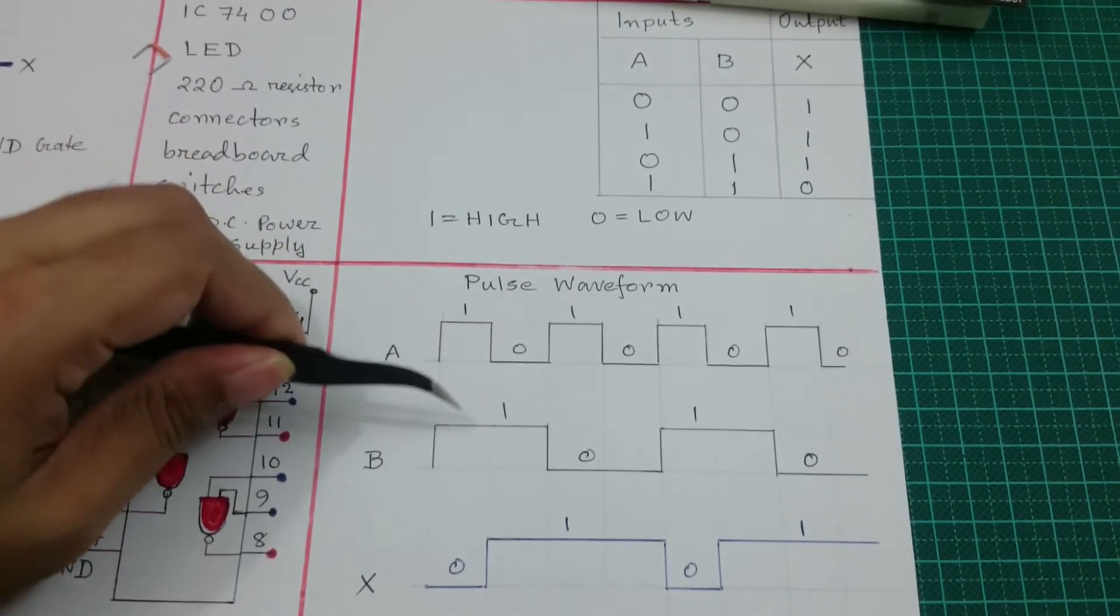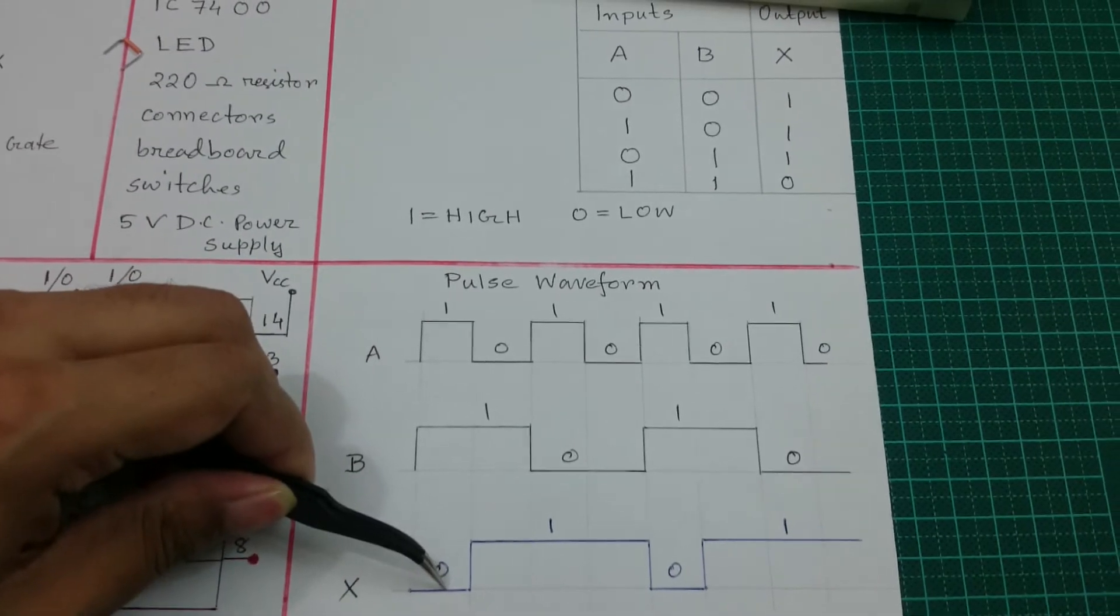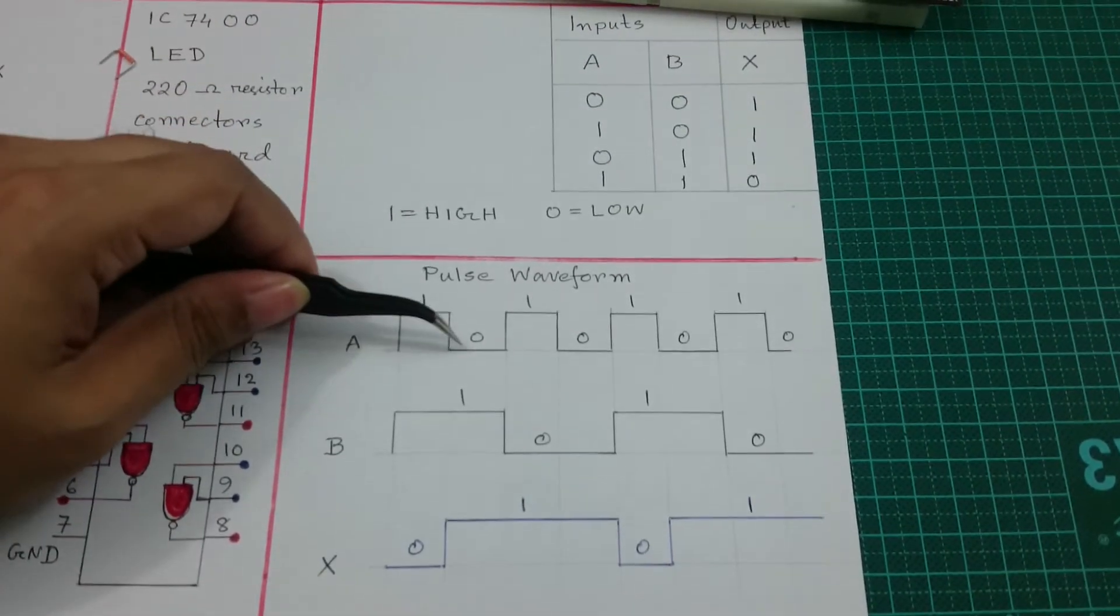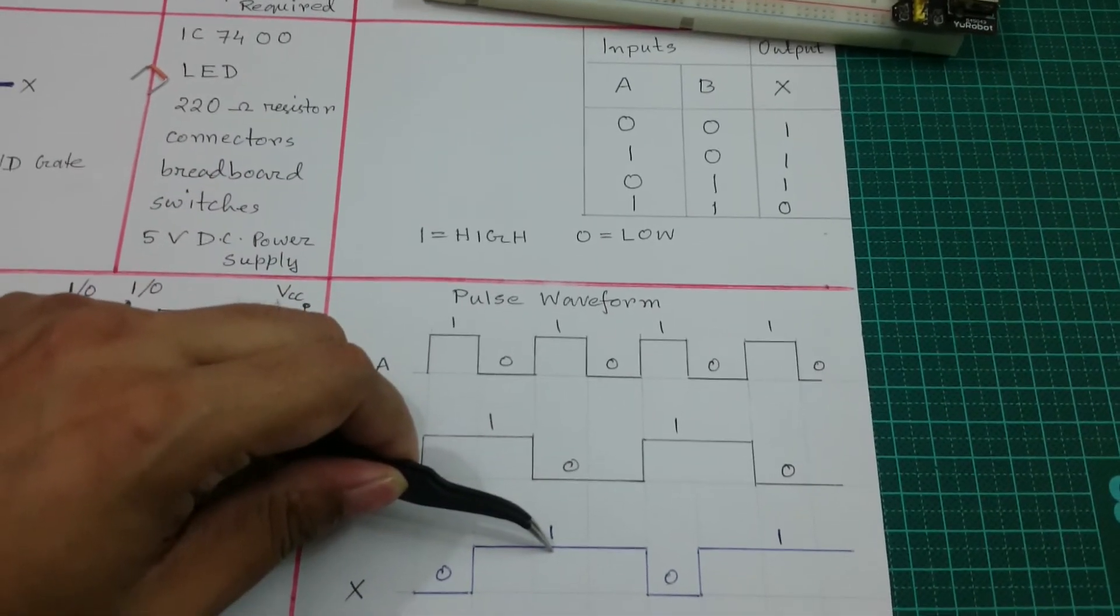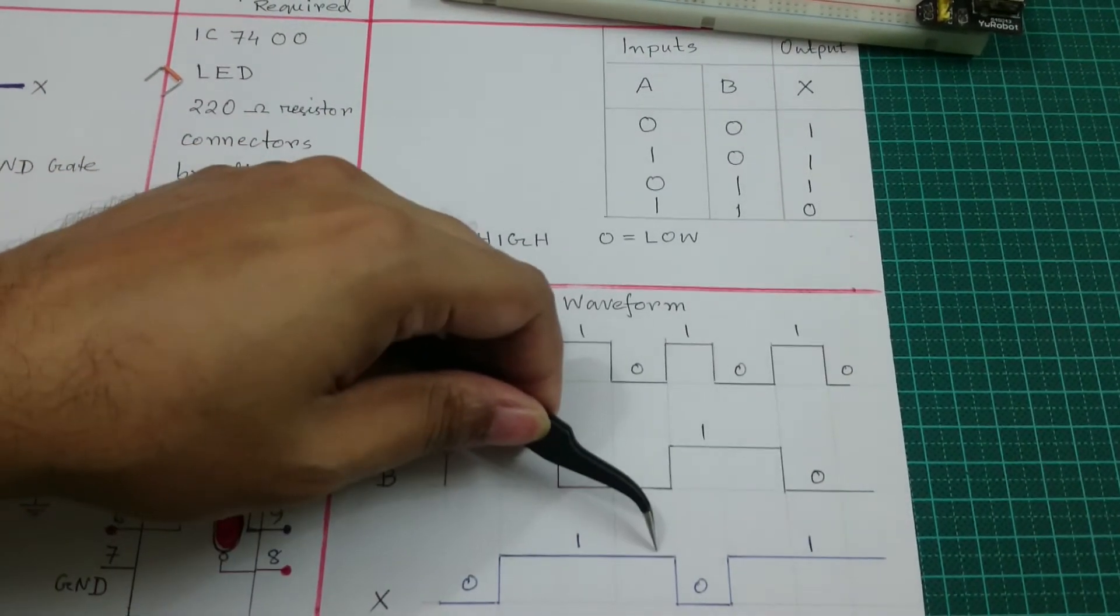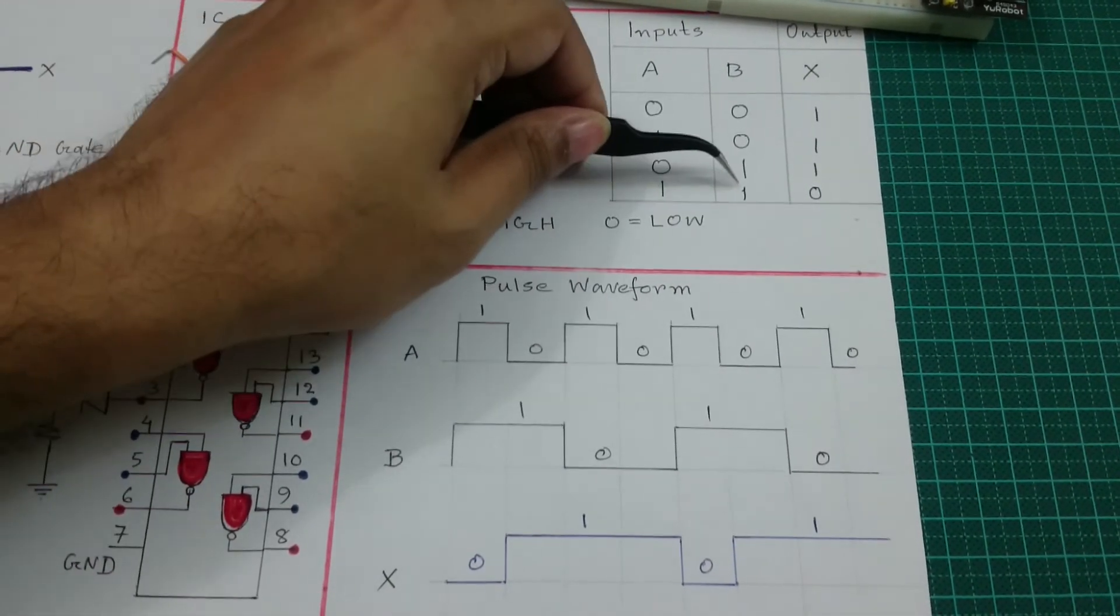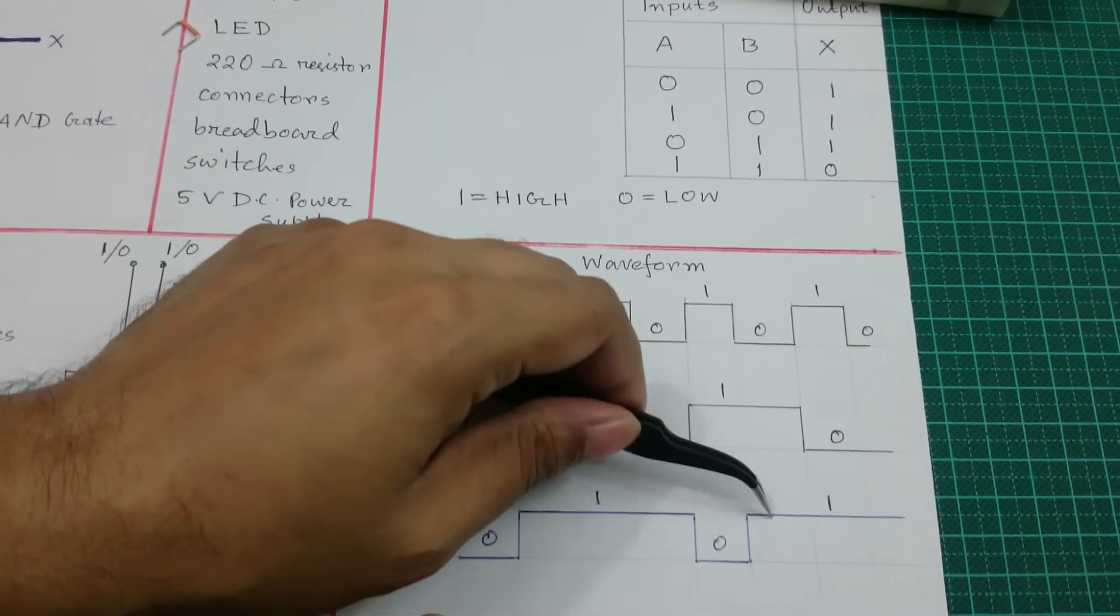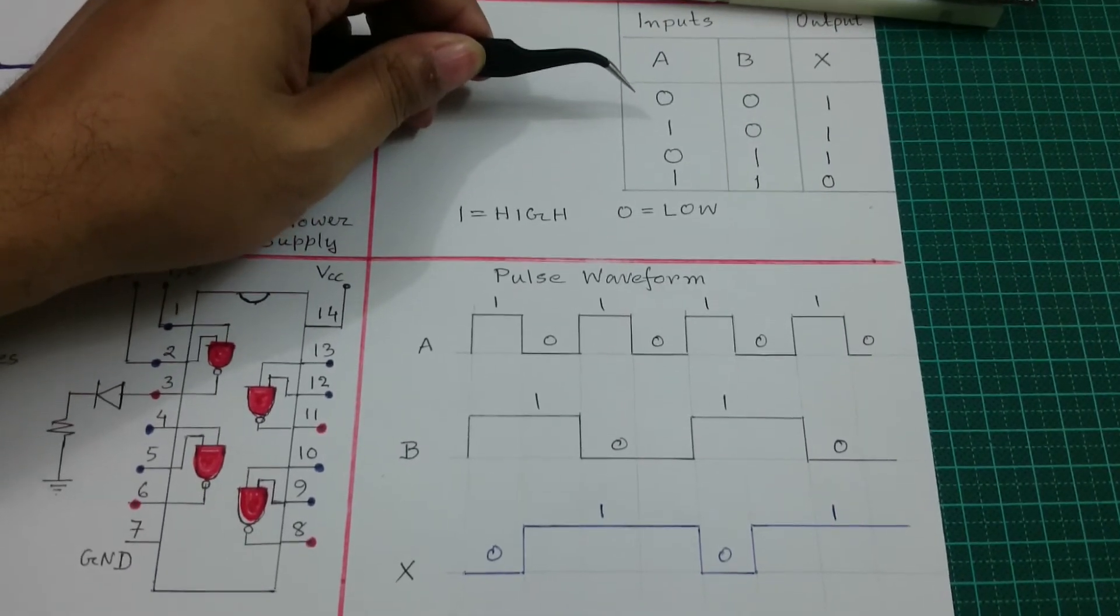For two 1 inputs, the output is 0. For 0-1 or 1-0 inputs, the output is 1. For 0-0 inputs, the output is 1. So three portions will be high. Then 1-1 produces 0, and 0-1 produces 1, and 1-0 produces 1. This waveform proves the truth table.